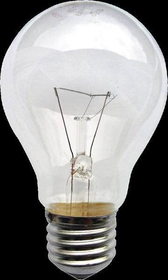An incandescent light bulb, incandescent lamp, or incandescent light globe is an electric light with a wire filament heated to such a high temperature that it glows with visible light. The filament is protected from oxidation with a glass or fused quartz bulb that is filled with inert gas or a vacuum.